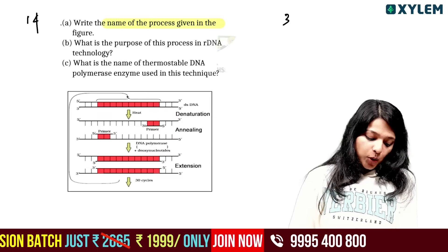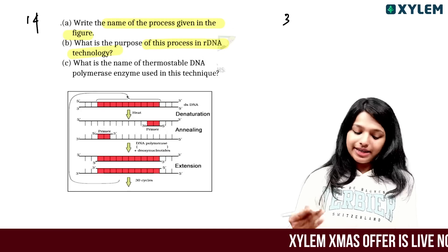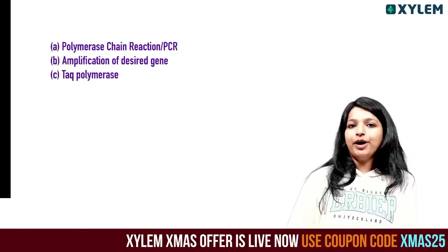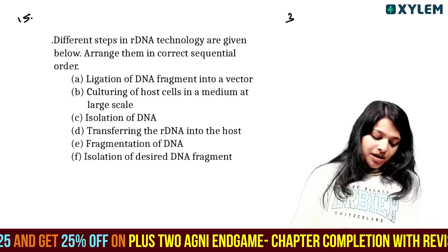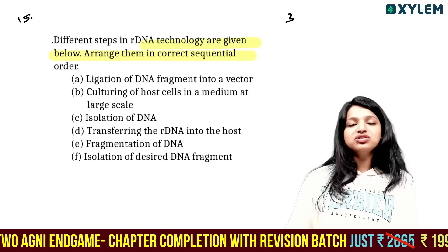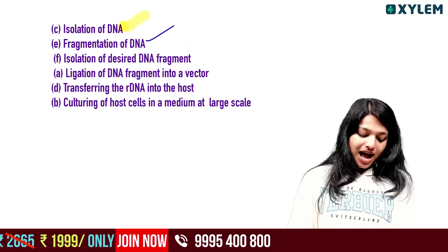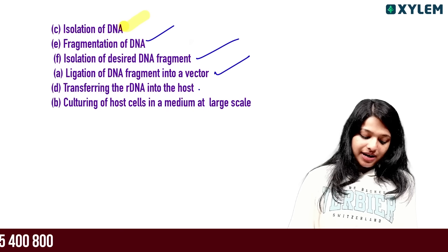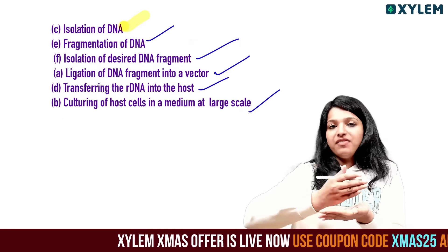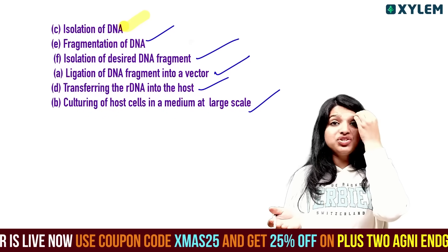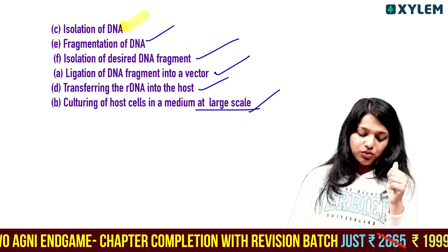Write the name of the process given in the figure. The process is PCR - Polymerase Chain Reaction. The purpose is copying and amplification of the desired gene. The thermostable DNA enzyme is Taq polymerase. The steps in rDNA technology in correct order are: isolation of DNA, fragmentation of DNA, isolation of desired DNA fragment, ligation of DNA fragment, transferring DNA into host, and culturing of host cell in medium for large scale production.